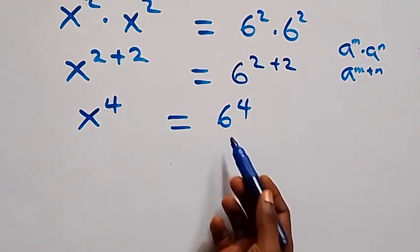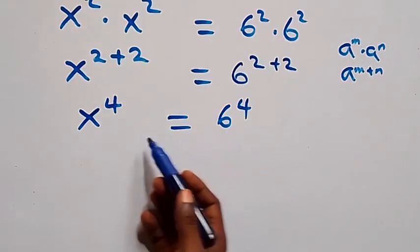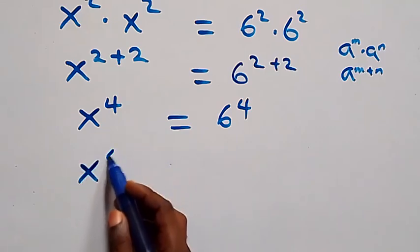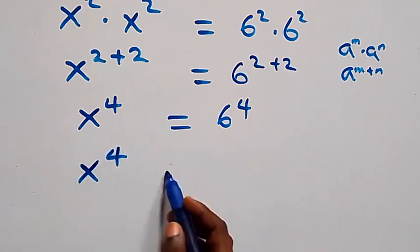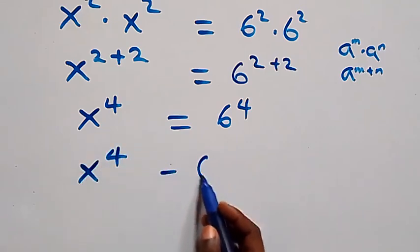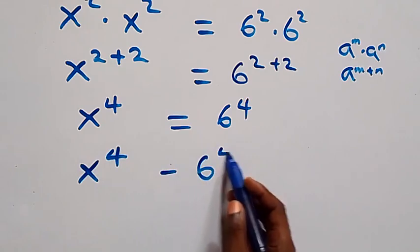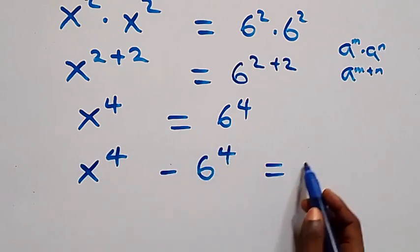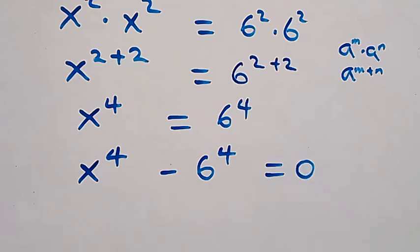We can take 6 raised to power 4 to the left-hand side, and we have x raised to power 4 minus 6 raised to power 4 equals 0.